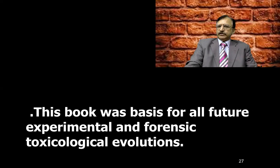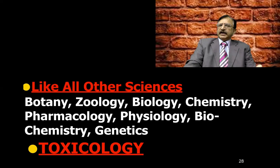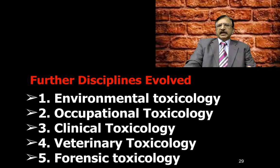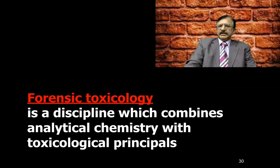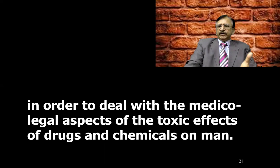Like all other sciences — biology, chemistry, pharmacology, physiology, genetics — toxicology was accepted as a science. It then evolved further disciplines, including environmental toxicology, occupational toxicology, clinical toxicology, veterinary toxicology, and forensic toxicology. Forensic toxicology is a discipline which combines analytical chemistry with toxicological principles in order to deal with the toxic effects of drugs and chemicals on humans.